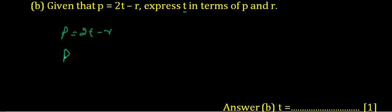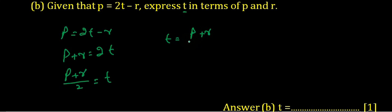So it can be written as p plus r equals 2t. Or we may write p plus r upon 2 equals t. Now t is the formula. Or we usually write the subject of the formula at the left side and the other terms on the right side. So it can be written as t equals p plus r upon 2.